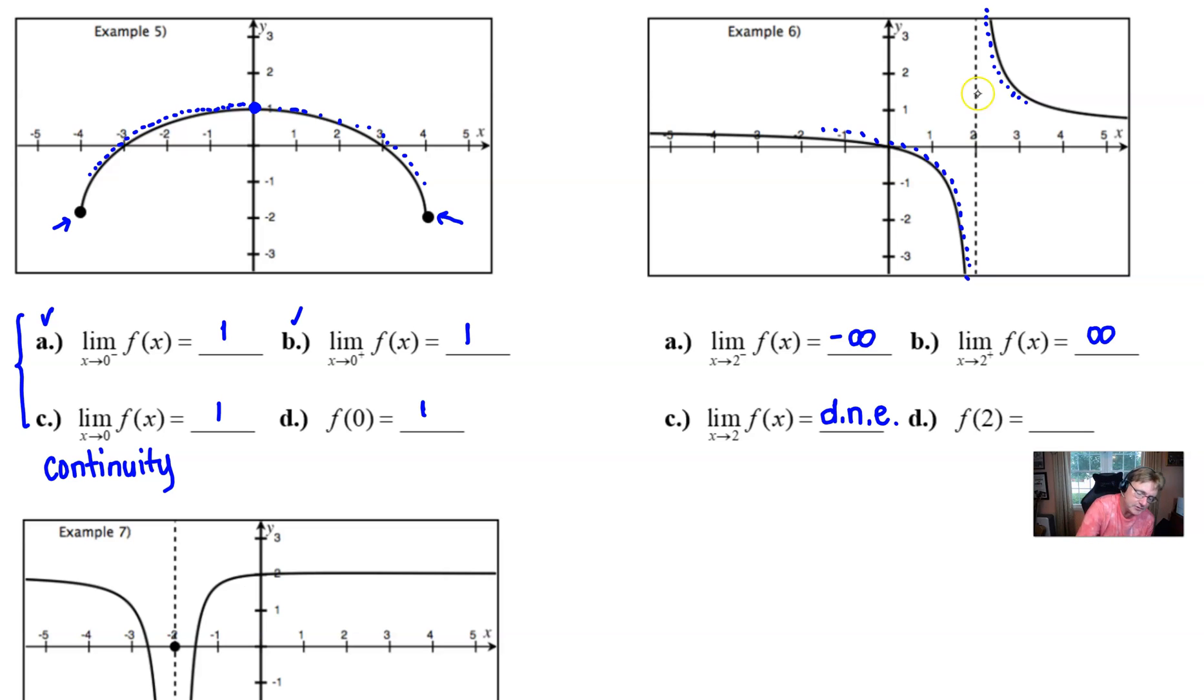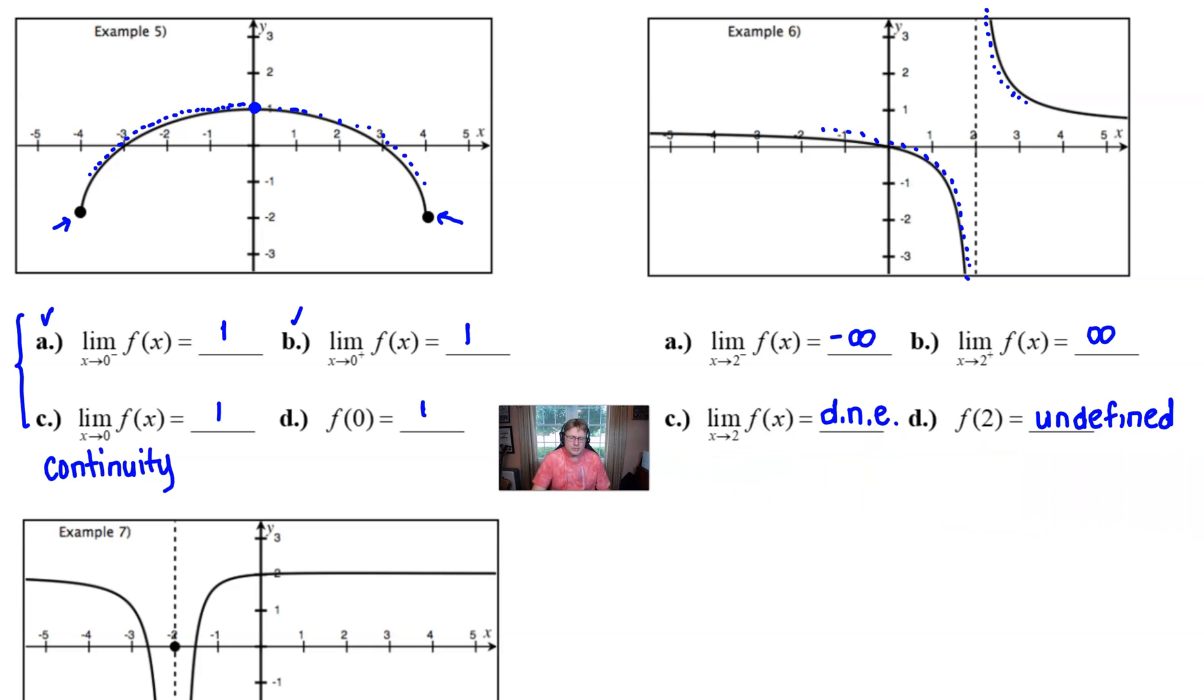And then for f(2) you notice that there really isn't anything that you see for a y value when x is equivalent to two and so the answer to that is going to be our good friend undefined. Now a lot of times students will ask me wait a minute what's the difference between does not exist and undefined? Well by and large I won't really split hairs with those two phrases and typically I will count them both correct no matter which one you use. But that does not exist is typically reserved when some kind of a concept has no answer. A concept. Well what do I mean by a concept?